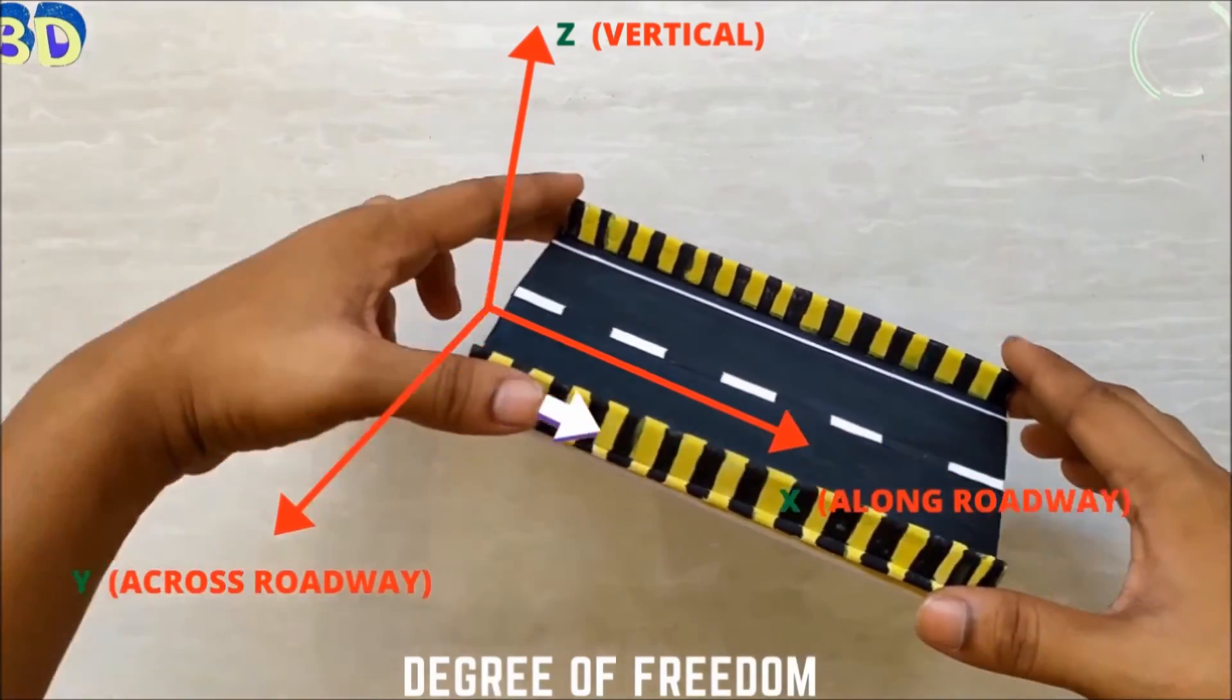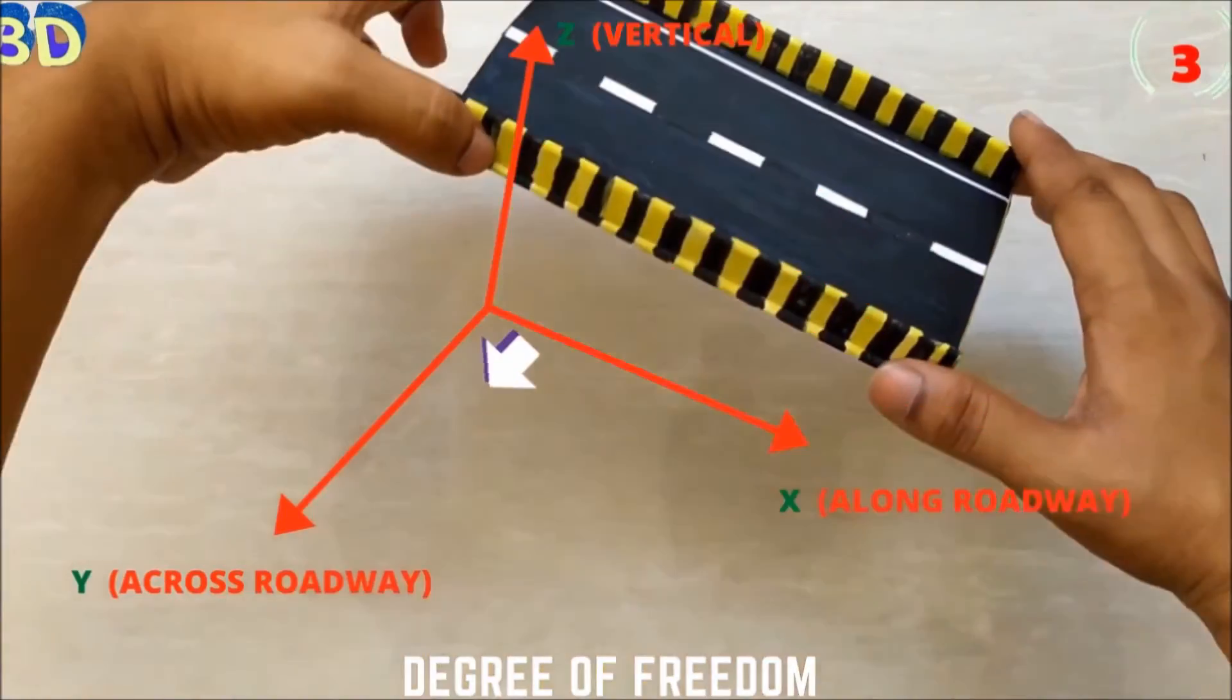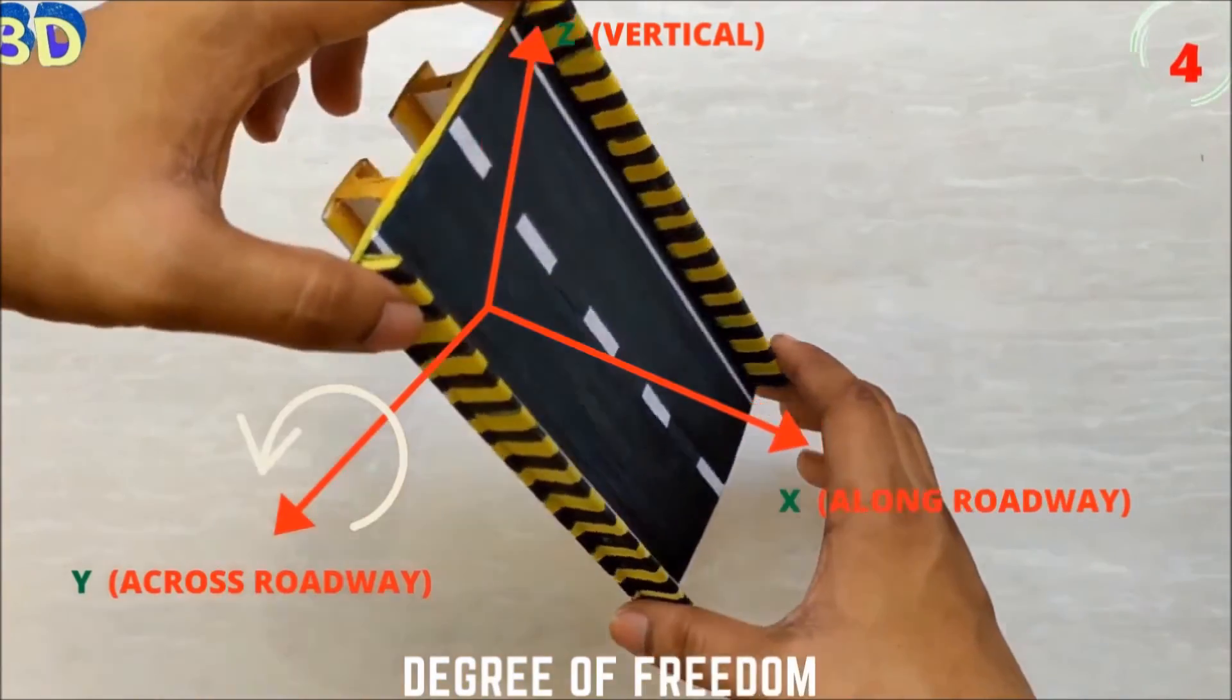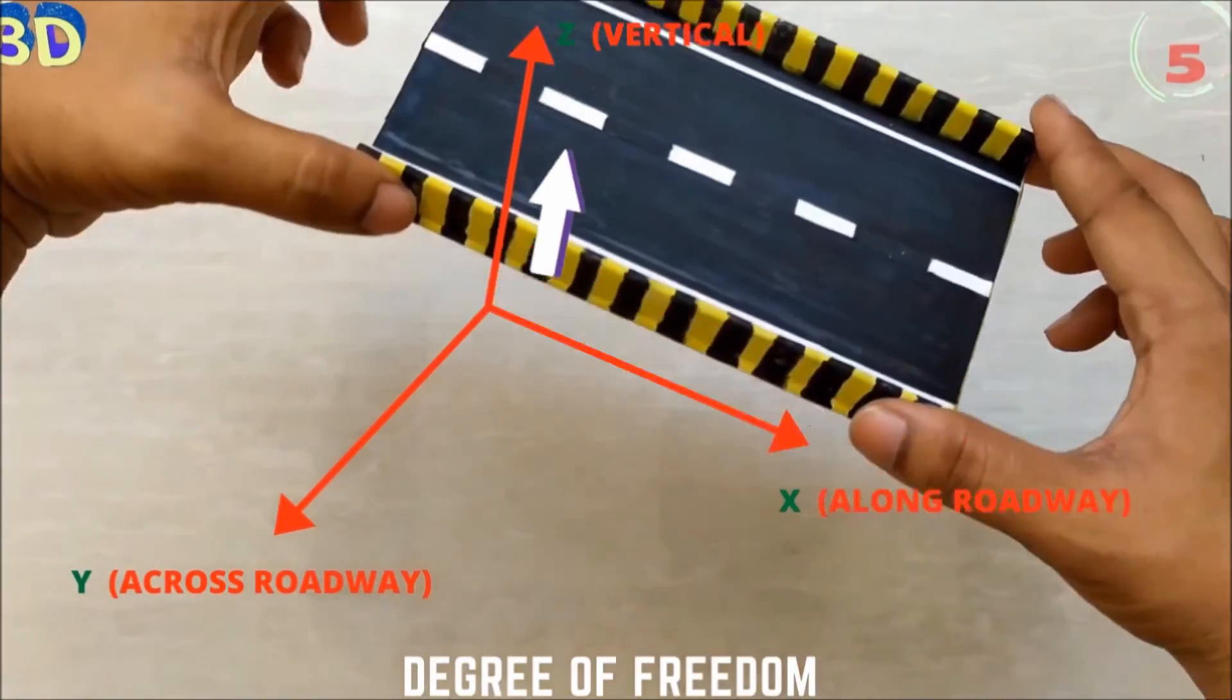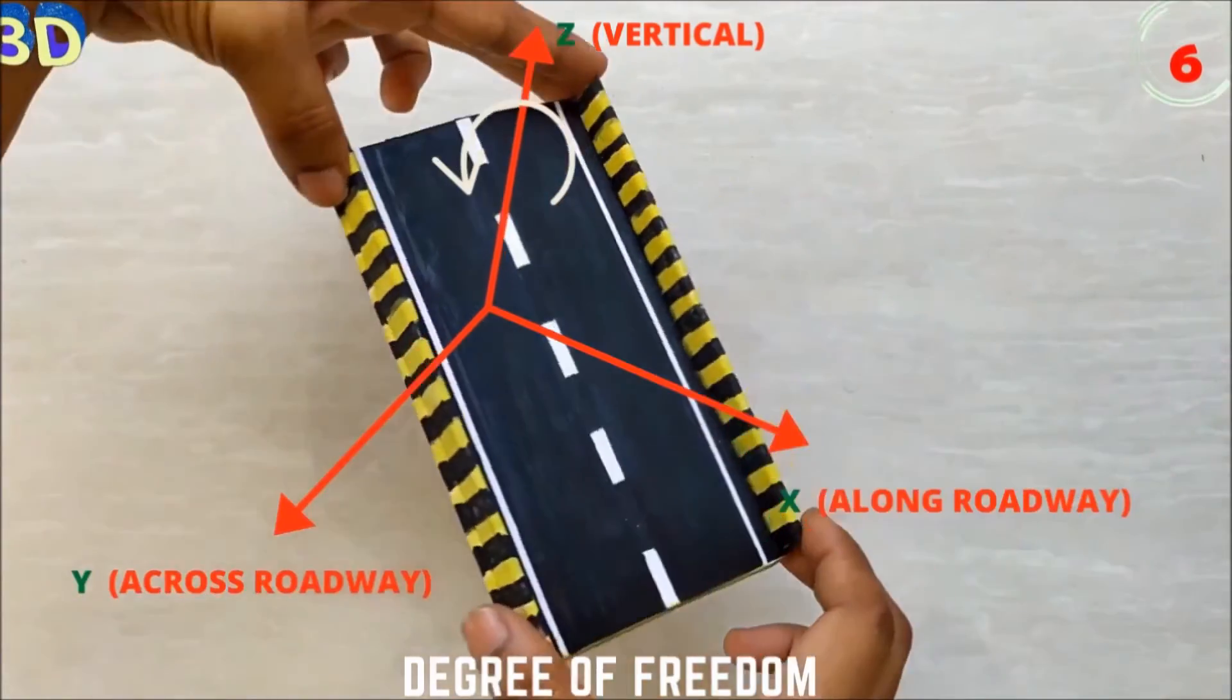These include translation in the x-axis along the roadway, rotation in the x-axis, translation in the y-axis across the roadway, rotation in the y-axis, translation in the z-axis vertically, and rotation along the z-axis.